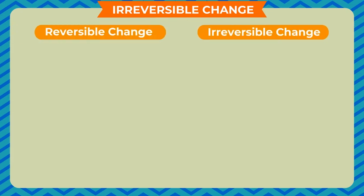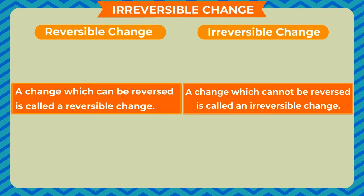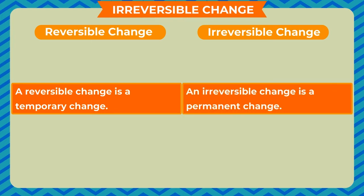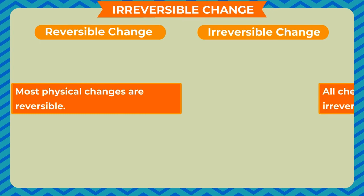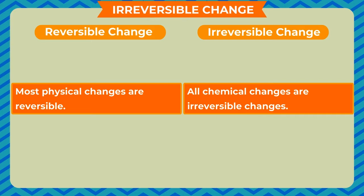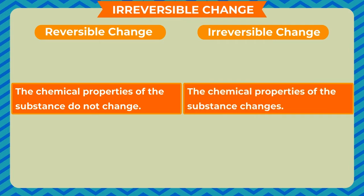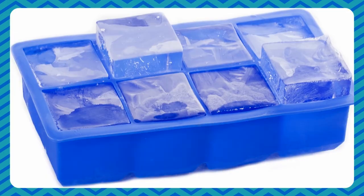Difference between reversible and irreversible change: A reversible change can be reversed, while an irreversible change cannot. A reversible change is temporary; an irreversible change is permanent. Most physical changes are reversible; all chemical changes are irreversible. In reversible changes, the chemical properties of the substance do not change; in irreversible changes, they do. In reversible changes, substances convert from one form to another but no new compounds are formed; in irreversible changes, new compounds are formed.